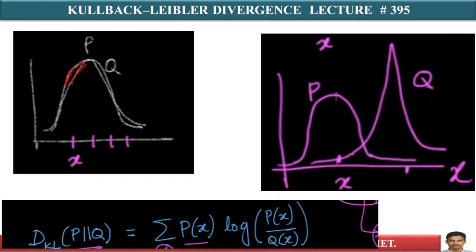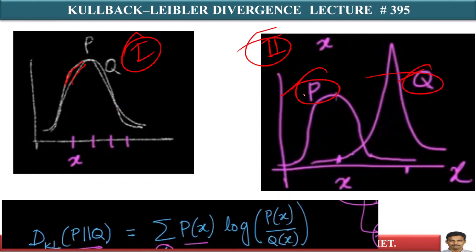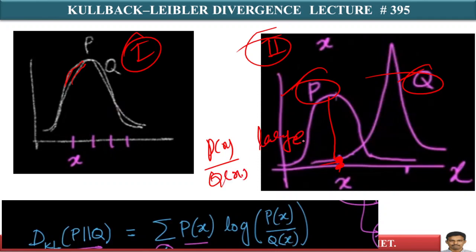What about the second case? Let's assume distributions P and Q are different. This is P and this is Q — second case. In this case P and Q are very different. Just take a point x where P(x) is very big compared to Q(x). Therefore at this point x, P(x) by Q(x) is a very large number. If it's a large number, log of a large number will also be reasonably a large number.